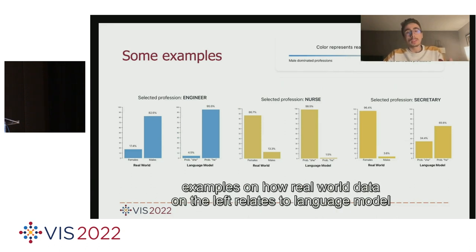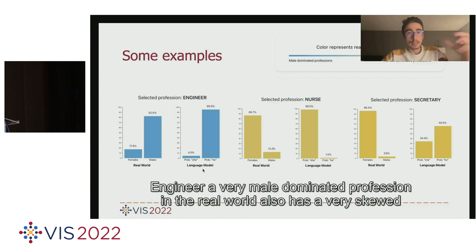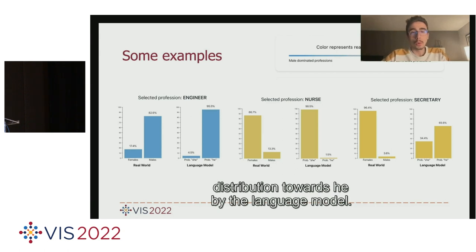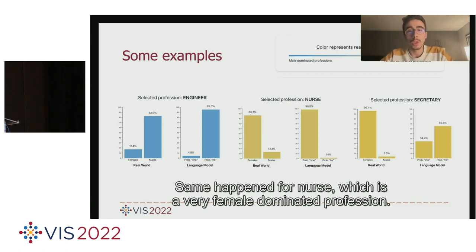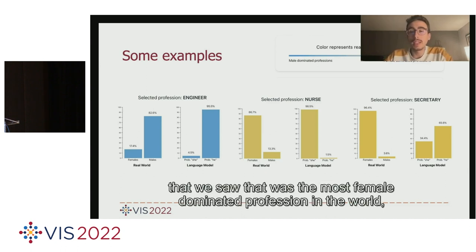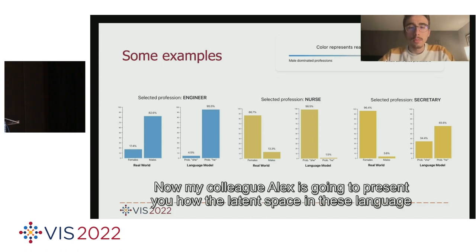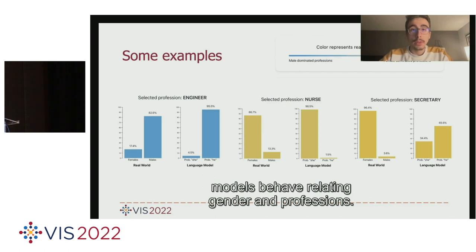We can see how real-world data relates to language model predictions for some examples. For engineer, a very male-dominated profession, the language model also has a very skewed distribution towards 'he.' The same happens for nurse, which is very female-dominated. However, for secretary — the most female-dominated profession in the data — the language model actually thinks 'he' is more likely to fill in that sentence. My colleague Alex will now present how the latent space in these language models behaves relating gender and professions.